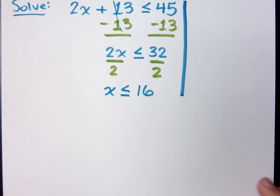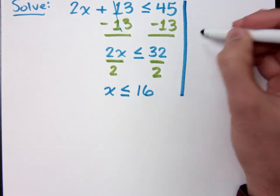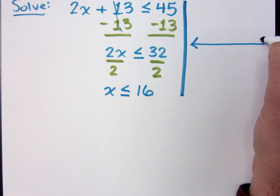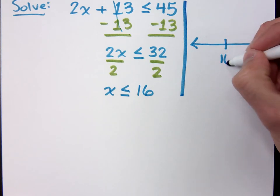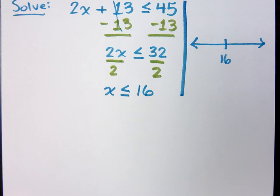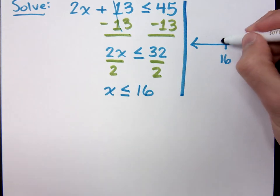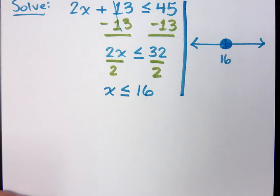Now let's look at the graph of this guy. If I were to graph the solution set here, here is 16. What kind of circle do I have at 16? What tells me that this is closed? Because it's equal to. That's right. Because it is equal to, and being equal to means I get to include it.